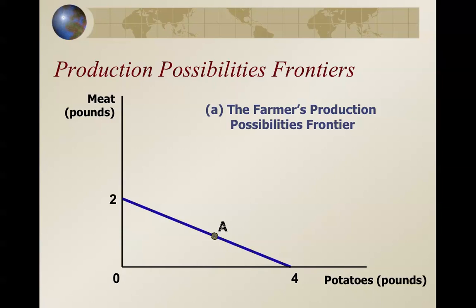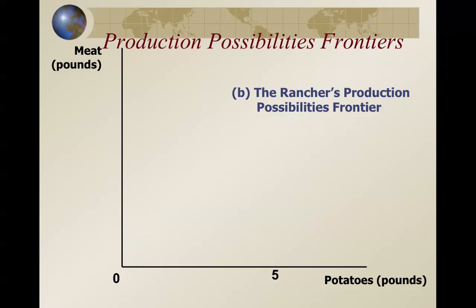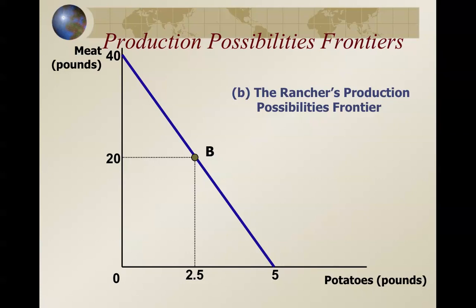Now we're going to look at the farmer's production possibilities. The farmer can produce either 2 pounds of meat or 4 pounds of potatoes, or if he or she wants a little bit of both, 1 pound of meat and 2 pounds of potatoes. For the rancher, production possibilities are far greater — either 40 pounds of meat or 5 pounds of potatoes, or some combination in between such as 20 and 2.5. So the rancher has far greater production possibilities than the farmer does.